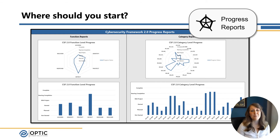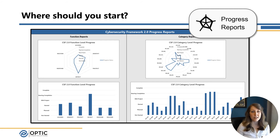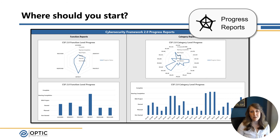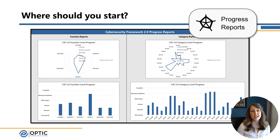Then we have our progress reports sheet, where we can see how our projects are coming along. We have radar charts and bar charts on this sheet again, both at the function and category level, and we can use this to view where we've spent our time and resources. Building resilience and maturity in cybersecurity is not a linear task — it's usually easy to go from maturity level one to level two, but getting to level three takes a lot more effort and focus. The progress report can help us demonstrate that just because we may not be showing an increase in maturity, we may be mid-project or nearing completion, and using these terms can help provide a different metric on where we stand and give comfort to stakeholders looking for progress.